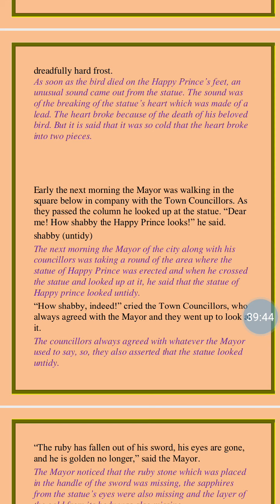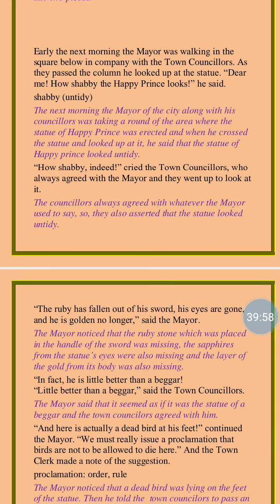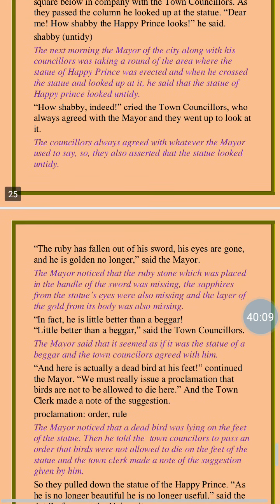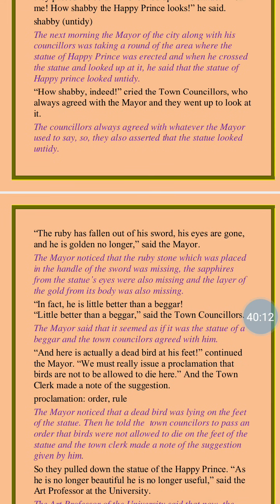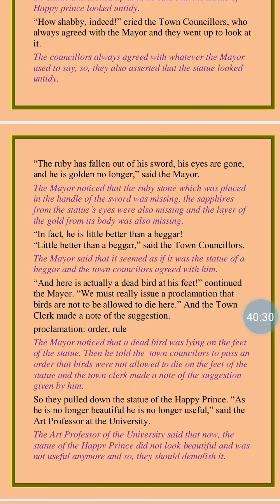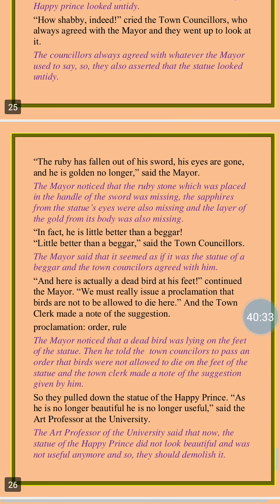'How shabby indeed!' cried the town councillors — they always agreed with the mayor — and they went up to look at it. 'The ruby has fallen out of his sword, his eyes are gone, and he is golden no longer,' said the mayor. All the ornaments had been taken away from the body of the statue, so it was no longer beautiful. 'In fact he is little better than a beggar,' said the mayor — meaning the condition of the statue of the Happy Prince was just like the condition of a beggar. The councillors also agreed with the statement of the mayor.